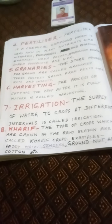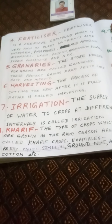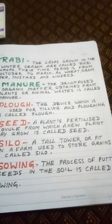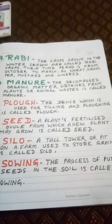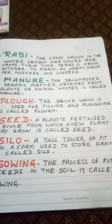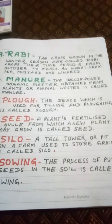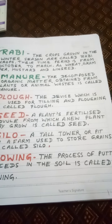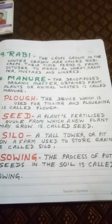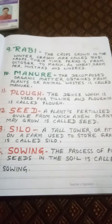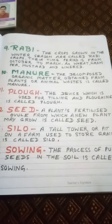Next keyword: Rabi Crops. The crops grown in the winter season are called Rabi crops. Their time period is from October to March. Examples include wheat, gram, pea, mustard, and linseed. Currently, Rabi crop harvesting is underway.